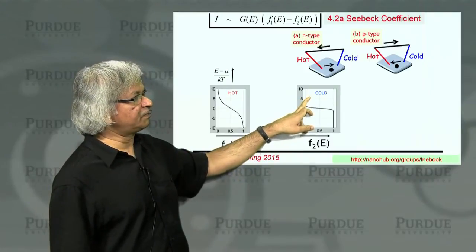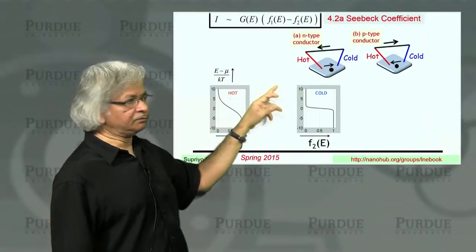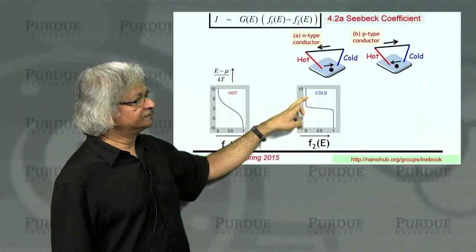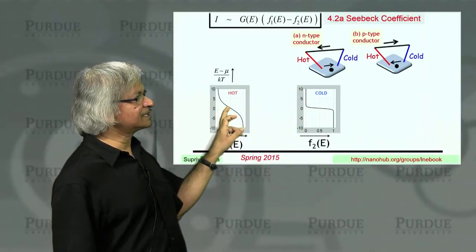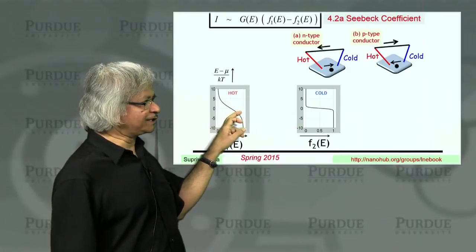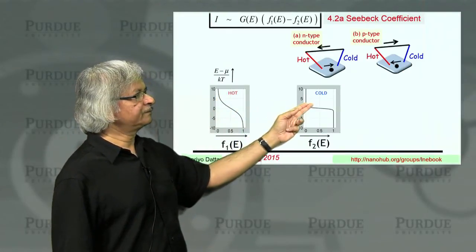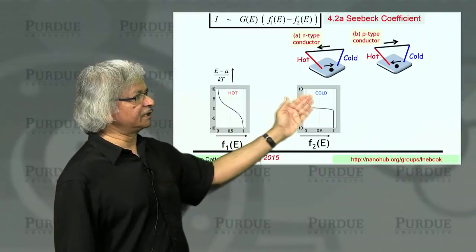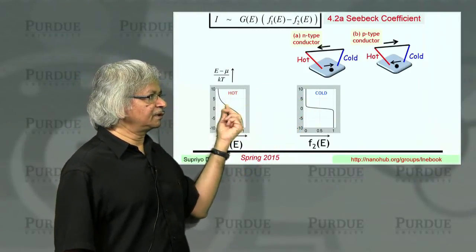If you look at these positive energies, positive meaning the energy is greater than mu, then you see on the cold side, the Fermi function is essentially 0, but on the hot side it's still not 0 because it takes a little longer to get back to 0. So right here, it's positive. F1 is bigger than F2.